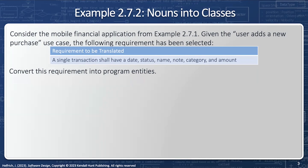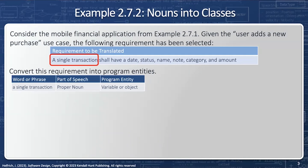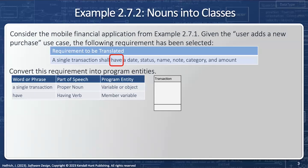A single transaction shall have a date, status, name, note, category, and amount. I want to converge this requirement into program entities, starting with a word and phrase from the requirements, identifying the part of speech, and then getting a program entity. 'A single transaction' is a proper noun — that's going to be a variable or an object, so I'll say 'transaction.' Then 'have' is a having verb, which means what follows are member variables belonging to a transaction. 'Date' is a common noun — a class or data type — so I'll create a class called Date.